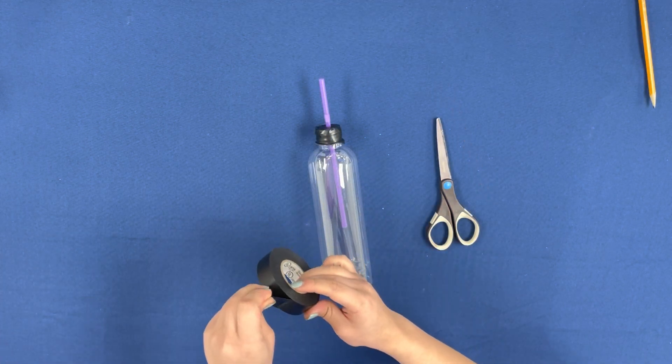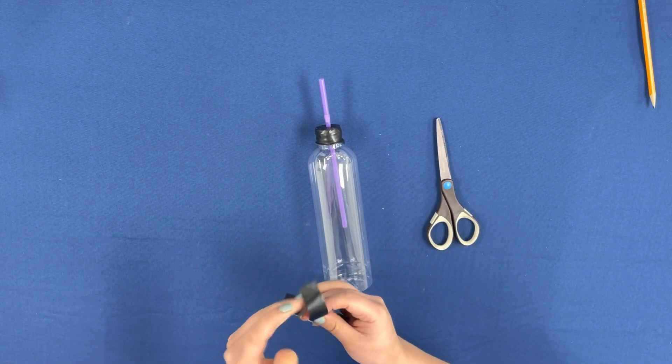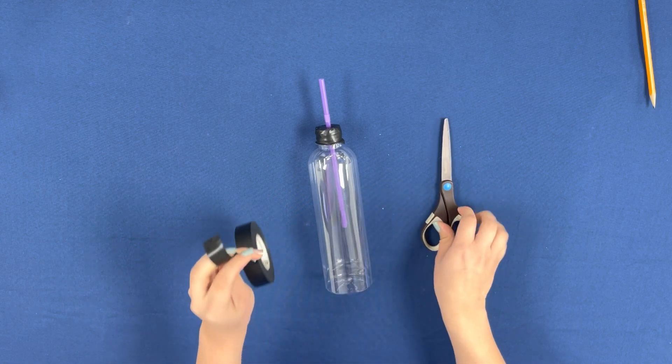Now, we will want to add a little more electrical tape in order to secure the straw in place.